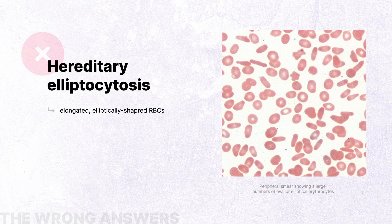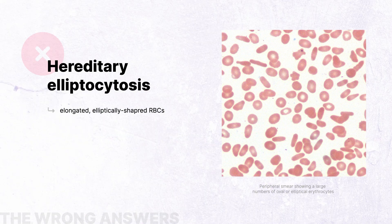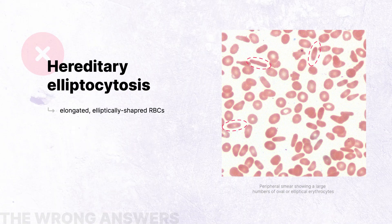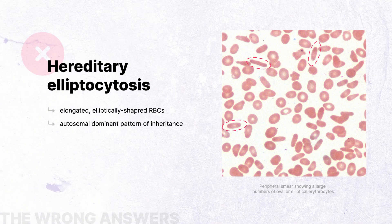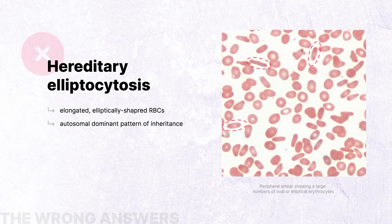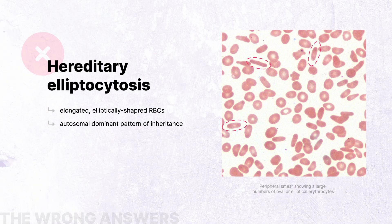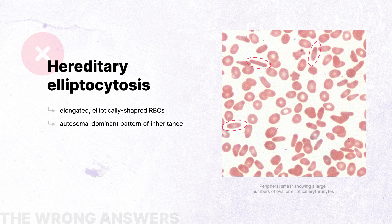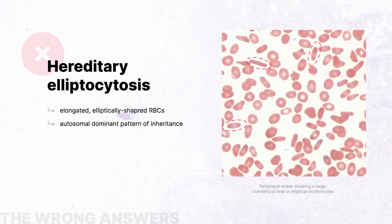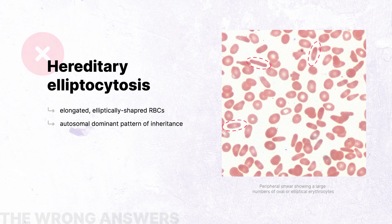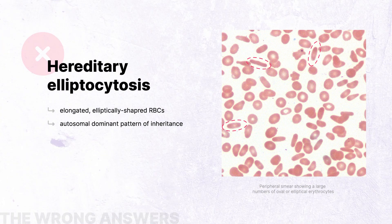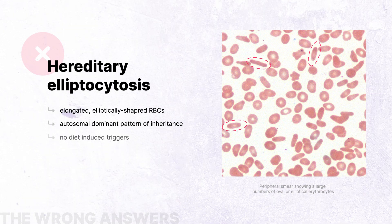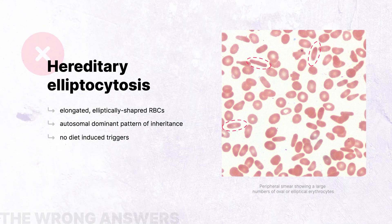Hereditary elliptocytosis is an inherited red blood cell disorder characterized by elongated, elliptically shaped red blood cells. It is classically inherited via an autosomal dominant pattern, with a clinical manifestation that is highly variable, ranging from patients being asymptomatic with elliptical blood cells on a peripheral smear as just an incidental finding, to patients with severe hemolytic anemia. It is characterized by large numbers of oval or elliptical erythrocytes on peripheral smear without bite cells or Heinz bodies, and there are typically no diet-induced triggers causing hemolysis.